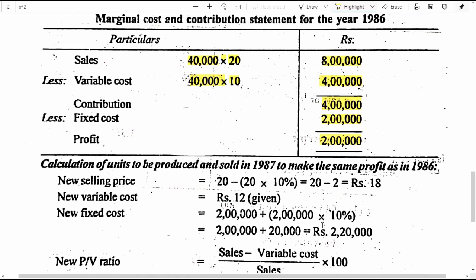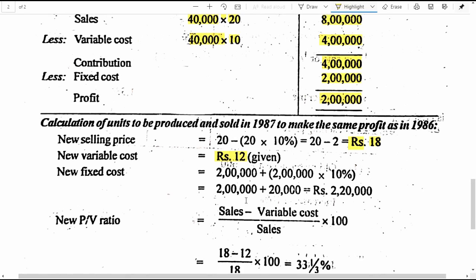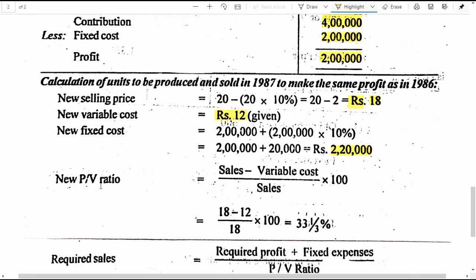Now, the changes that are going to take place in the next year 1987: the selling price is going to be reduced by 10%, becoming 18 rupees from 20 rupees. The variable cost is going to increase by 2 rupees, from 10 rupees to 12 rupees per unit. Fixed cost will increase by 10%, so from 2 lakh it becomes 2 lakh 20,000. Now let us calculate the new profit volume ratio after incorporating these changes.